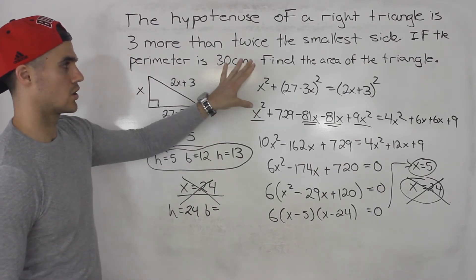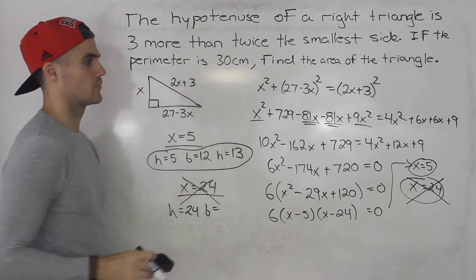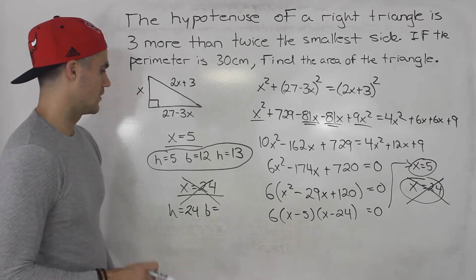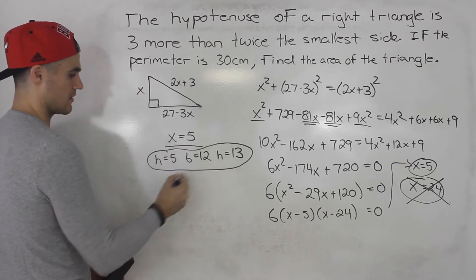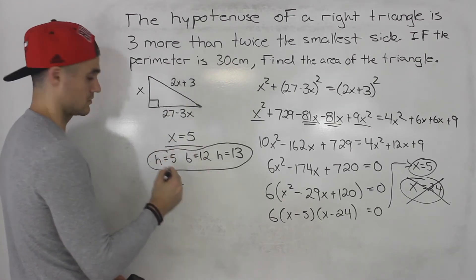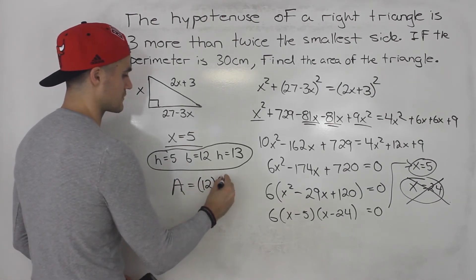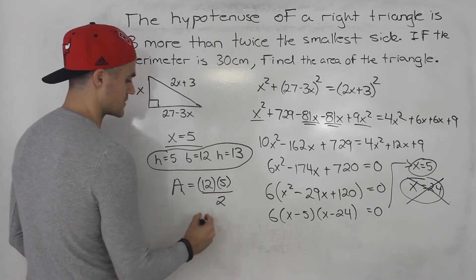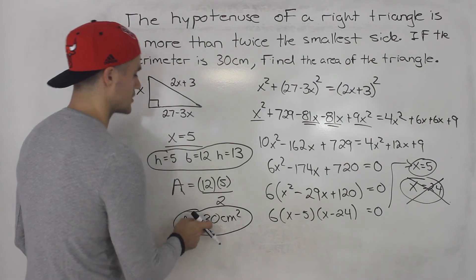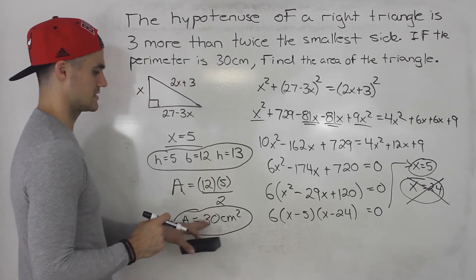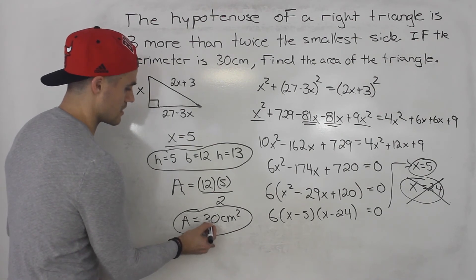So we ignore x equals 24, because it doesn't work in the word problem. For the quadratic equation in abstract form that is a solution, but you always have to relate it back to the scenario you're dealing with. So the dimensions we're working with are height 5, base 12, hypotenuse 13. The area is base times height divided by 2: 12 times 5 is 60, divided by 2 gives us 30. So the area is 30 centimeters squared.